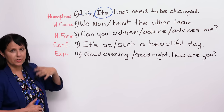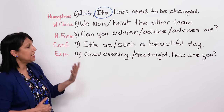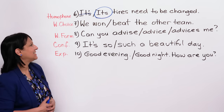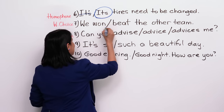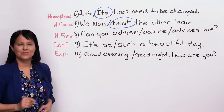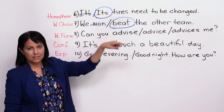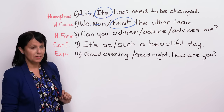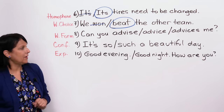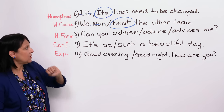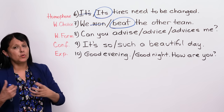Number seven is an example of incorrect word choice. 'We won the other team' or 'We beat the other team' — which is it? It should be 'We beat the other team,' not 'we won the other team.' You beat the other side, the other player, your opponent — but you win the game, the championship, the match. So 'win' is used with the game or the match or the championship, and you 'beat' the other side. It's more of a vocabulary issue — you have to choose the right word.